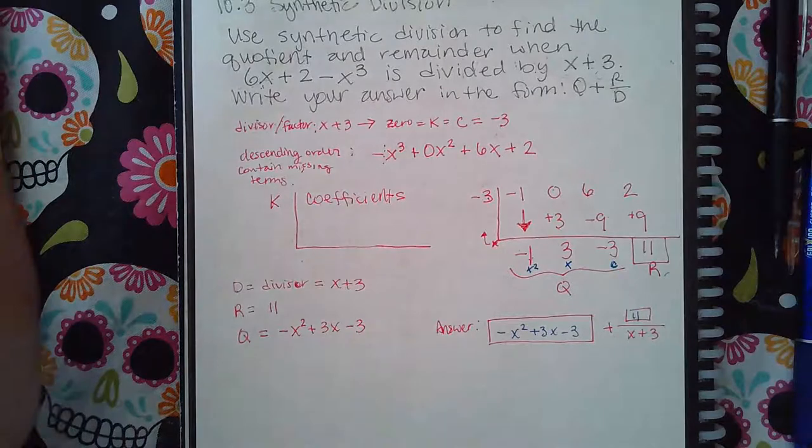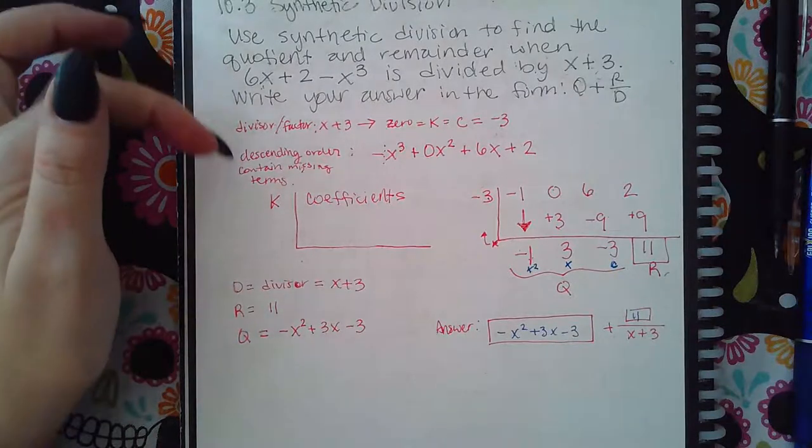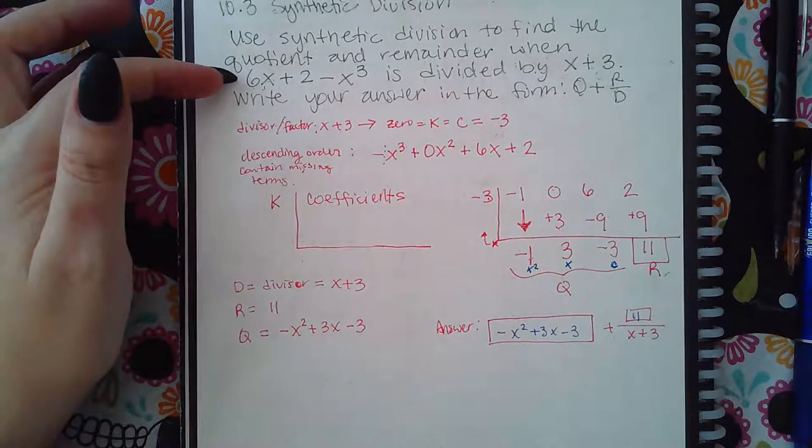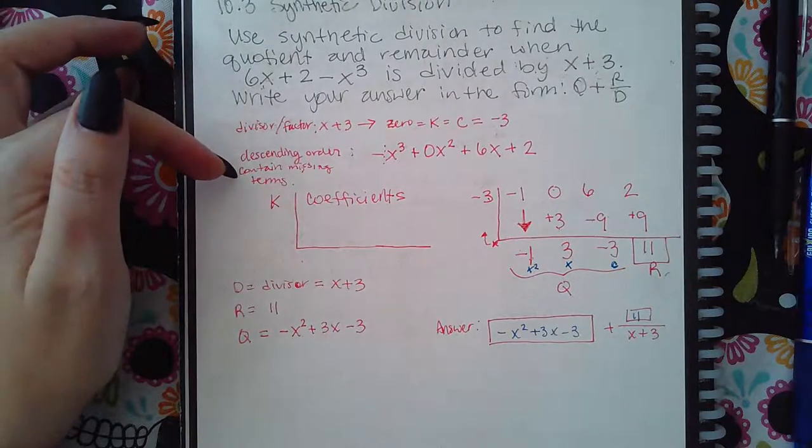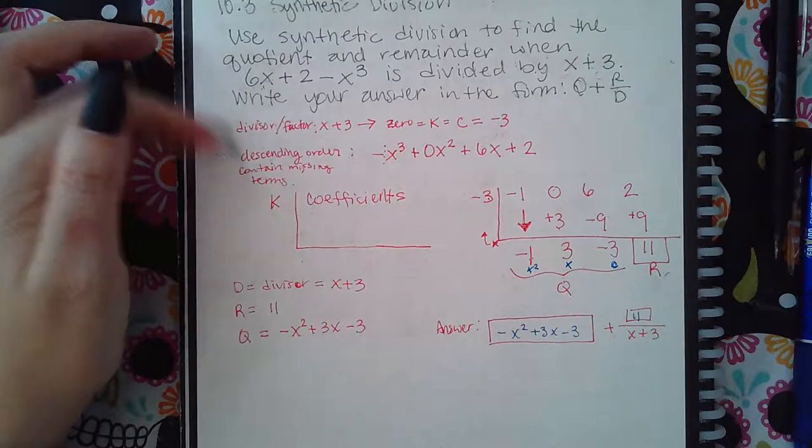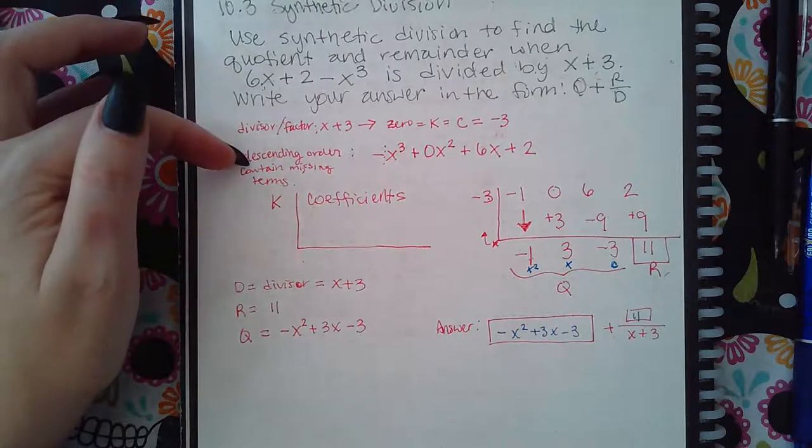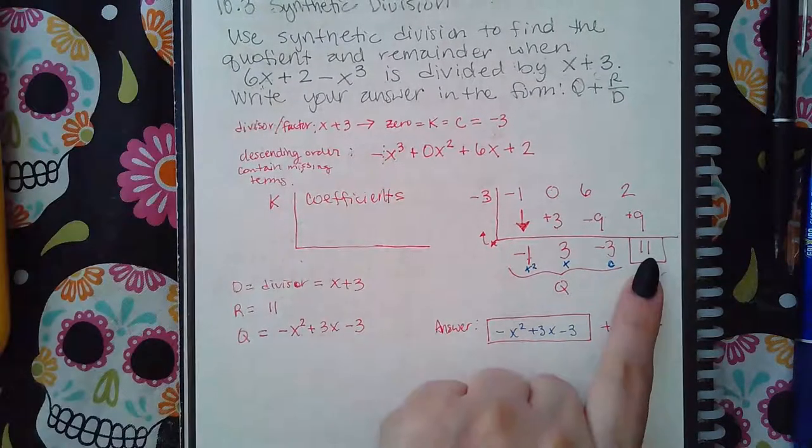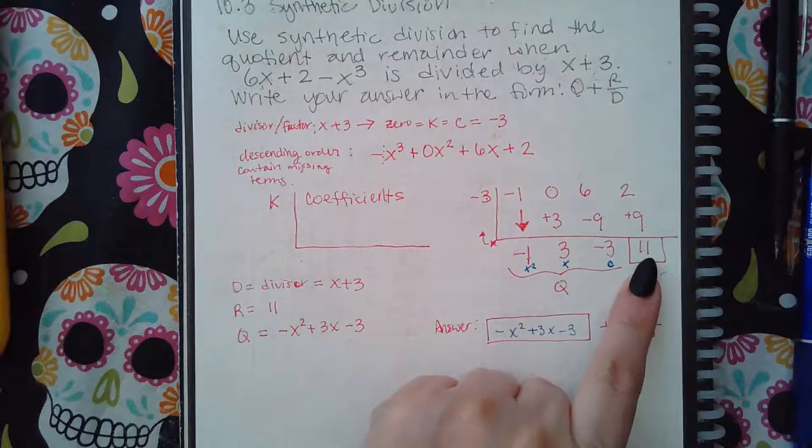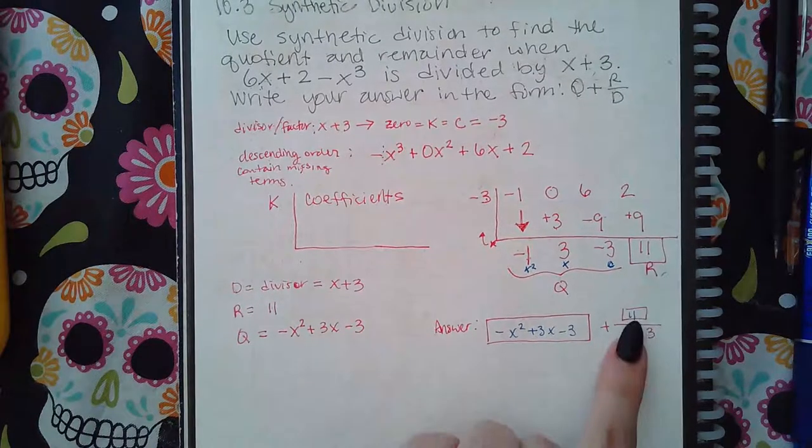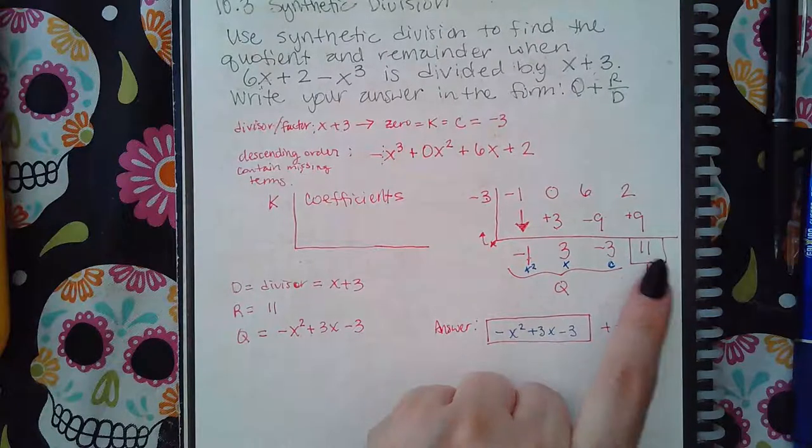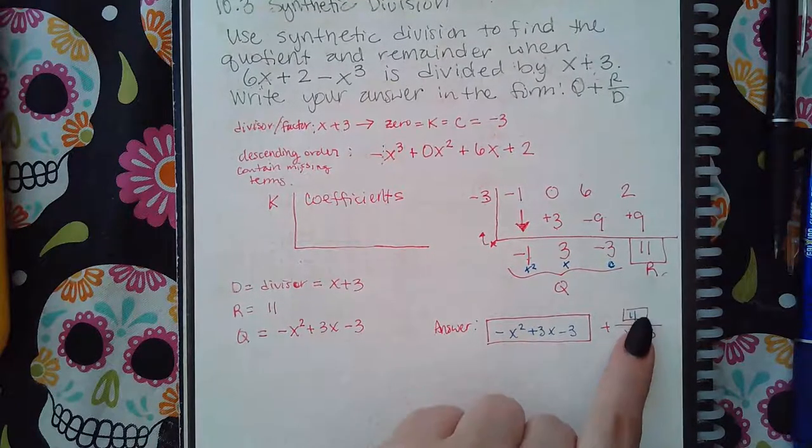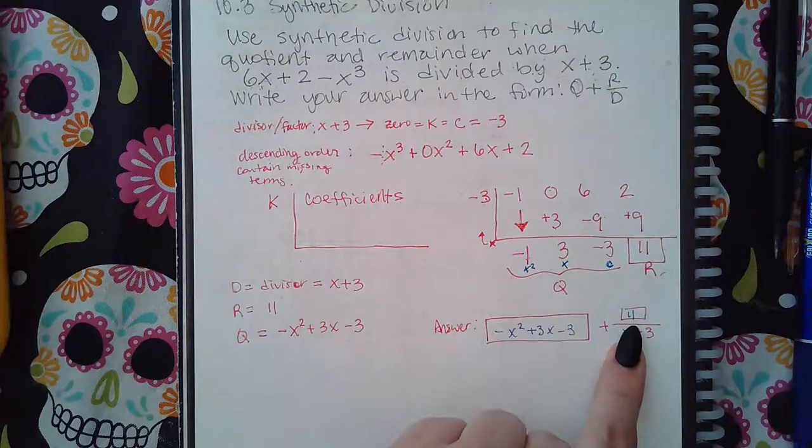Now, not every single problem is going to make you put it in descending order because some of them will already be in descending order. That's great. But double check that it is. Some of them won't have any missing terms. Again, that's great, but be sure. Sometimes you get a remainder of zero and that's okay too. Put a zero here. Whatever number you get in that last entry, box it because that is your remainder and that is what will go on top of the fraction.